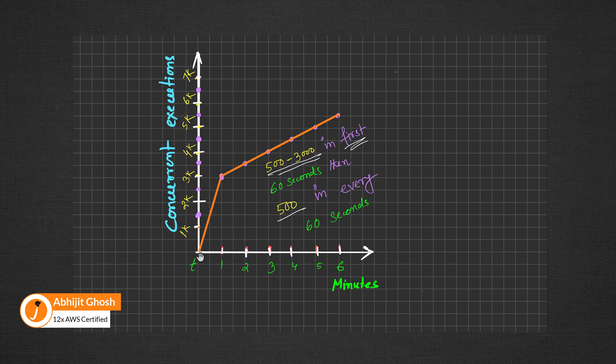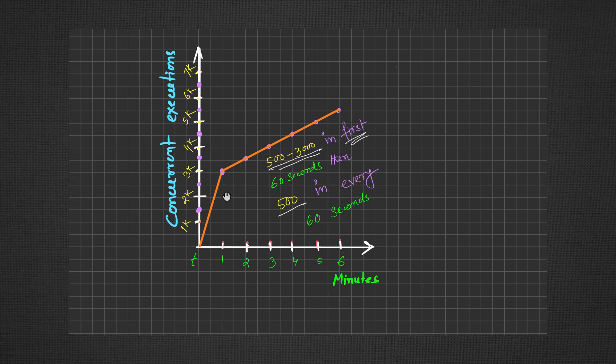In the past, AWS Lambda functions could initially scale at the account level by 500 to 3000 based on the region in the first minute, followed by an increase of 500 concurrent executions every subsequent minute.